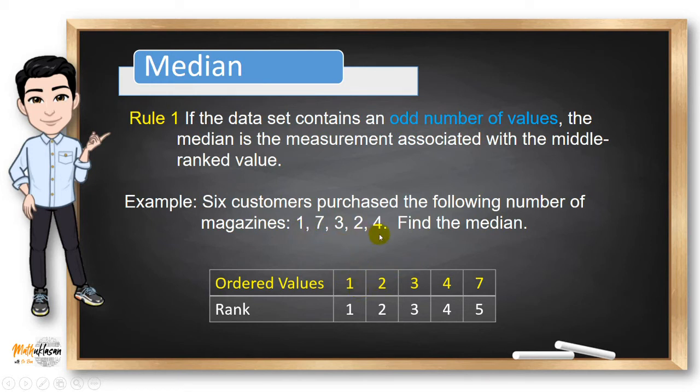And this is an odd number of values. That is why we need to follow rule number one. All we need to do is to identify the middle rank value. So if we have ranks one to five, the middle rank is three. And what corresponds this rank is the value three in the given data set. Therefore, the median for this data set is three.